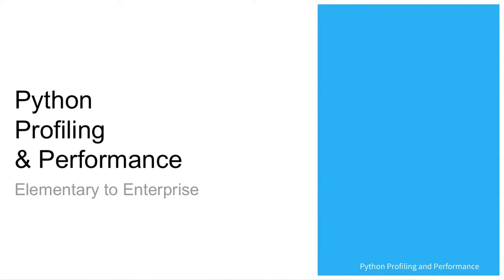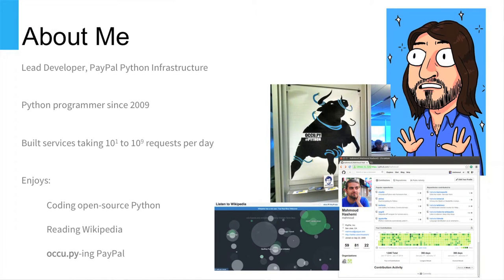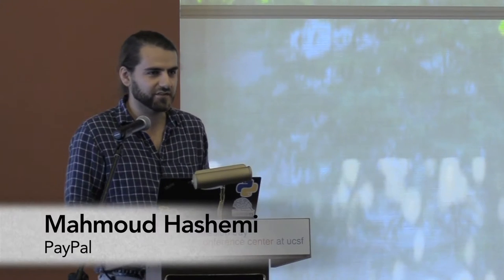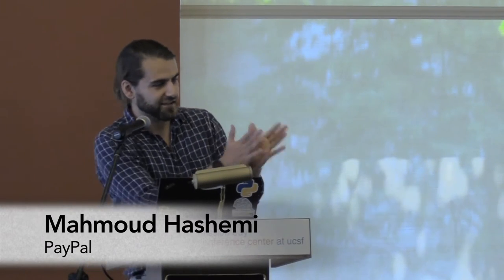This is Python profiling performance, elementary to enterprise. We're going to be covering from little intro stuff all the way to enterprise level stuff. My name is Mahmoud. I'm lead developer at PayPal Python infrastructure. We do a lot of enterprise stuff. I've been doing Python since about 2009. Before that, I did PHP and Java. I've built services at PayPal that take between 10 requests a day and a billion requests a day, all in Python.